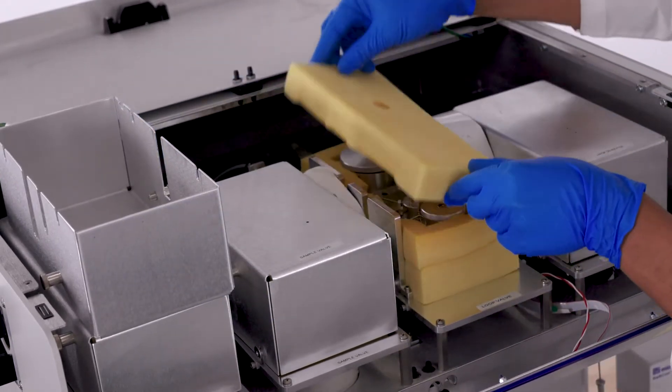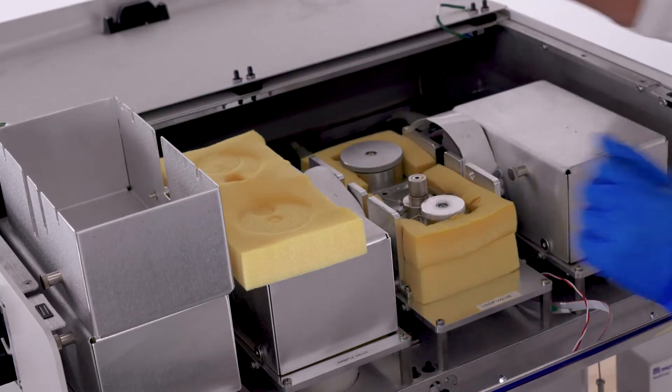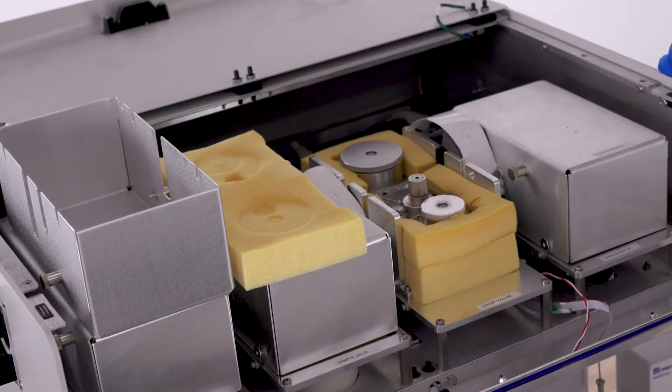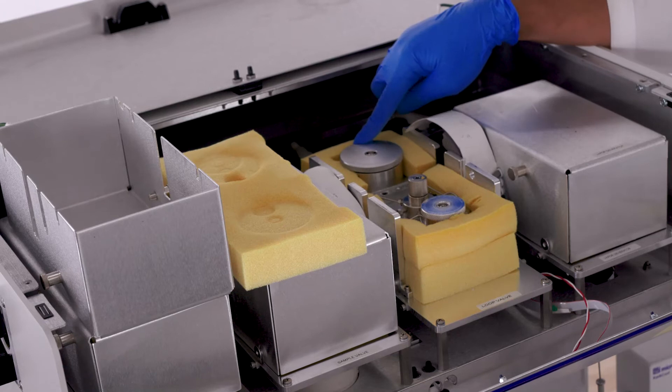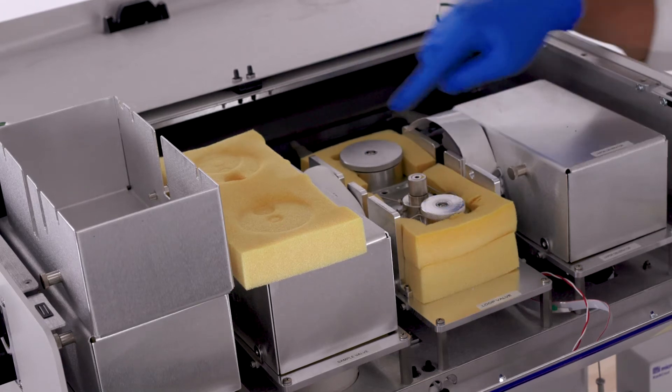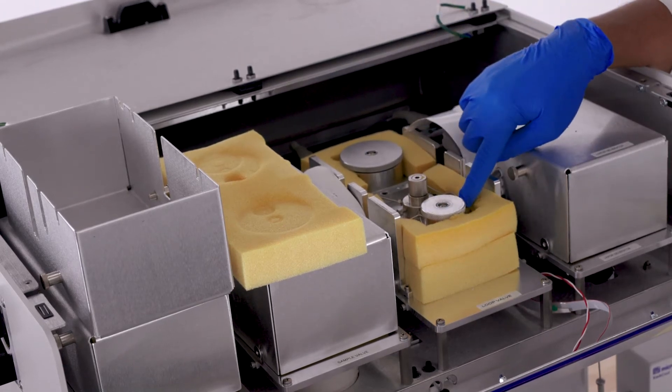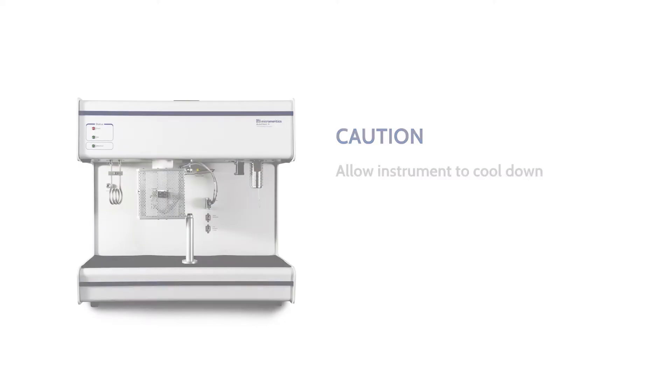Remove the top foam insulation and set it aside. There are two loop enclosures on the AutoChem 2. The enclosure to the rear of the instrument will hold the 5 cc loop, while the enclosure to the front of the instrument will hold either a 0.5 cc loop or a 1 cc loop.